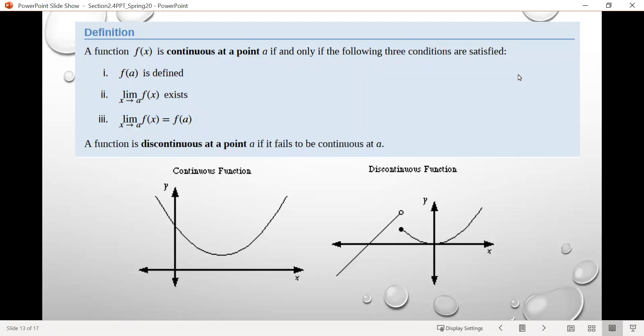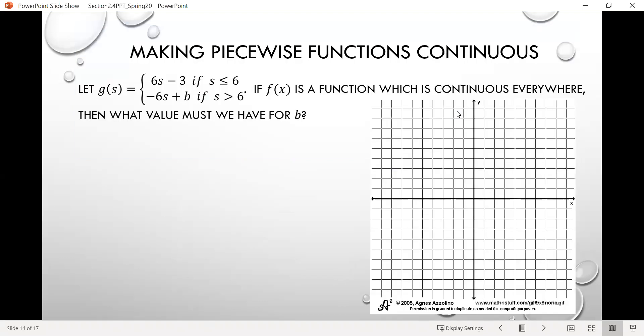So if any one of those criteria is violated, then we know the function would be discontinuous at that particular point. All right, so let's look at an example involving piecewise functions.